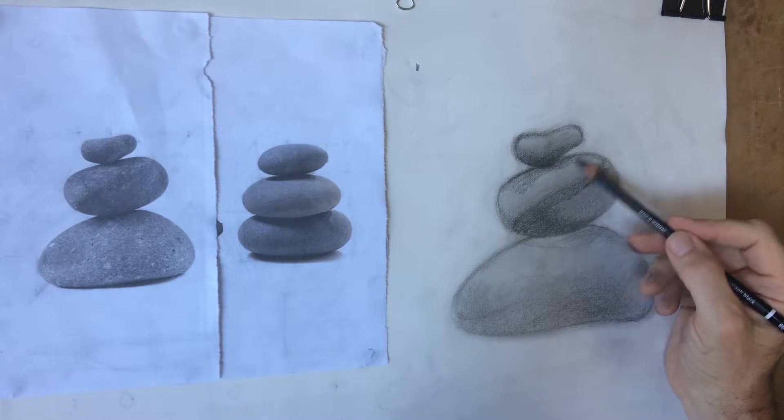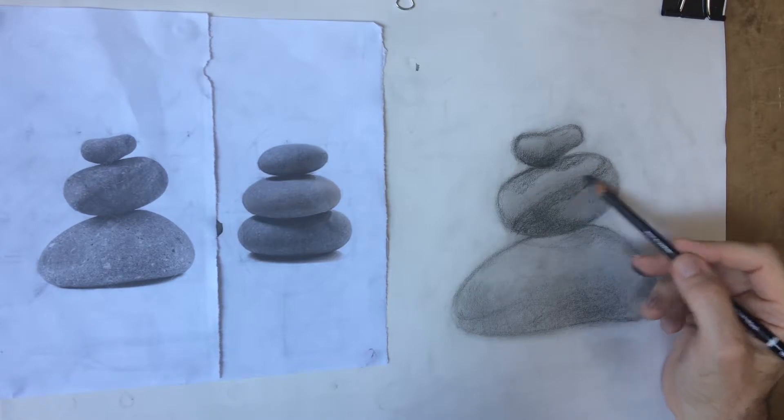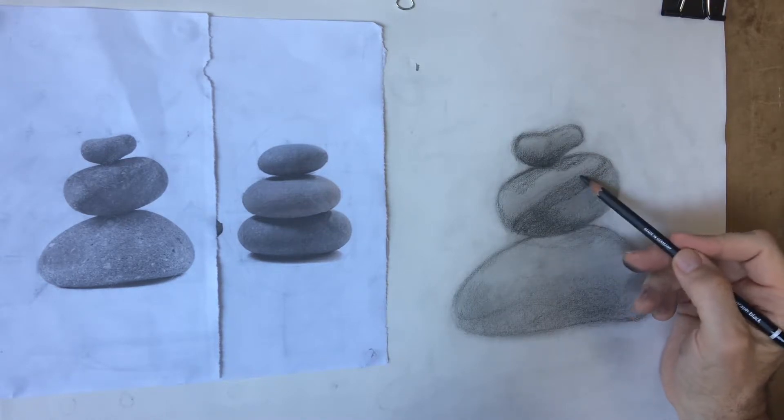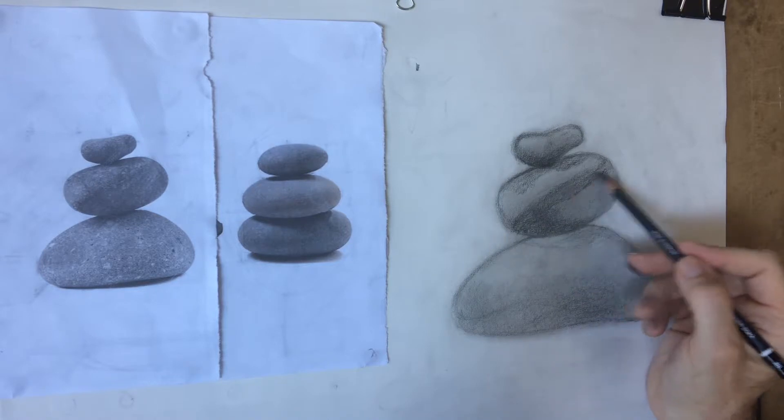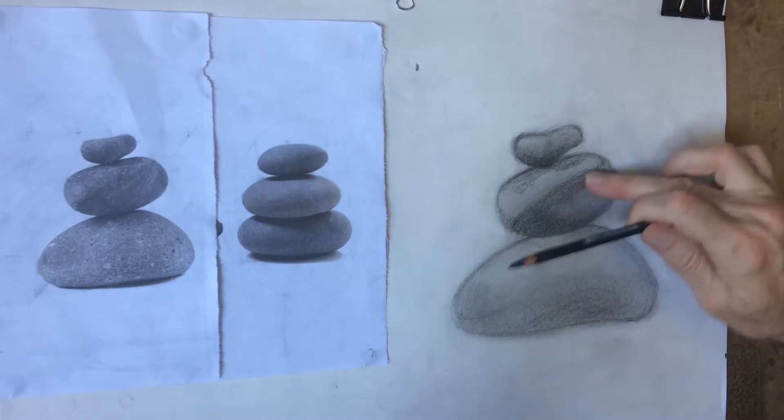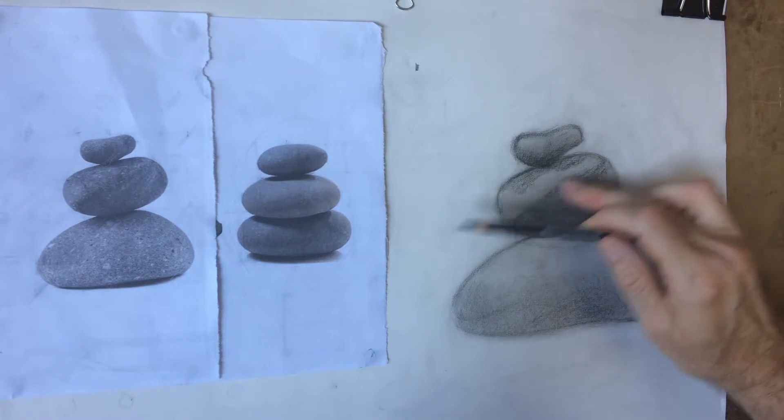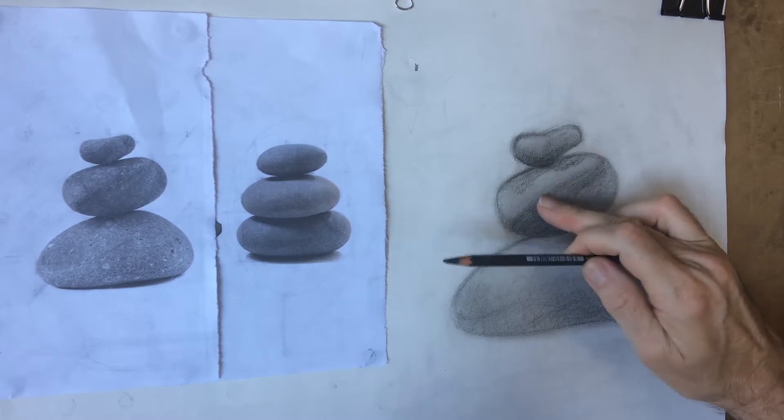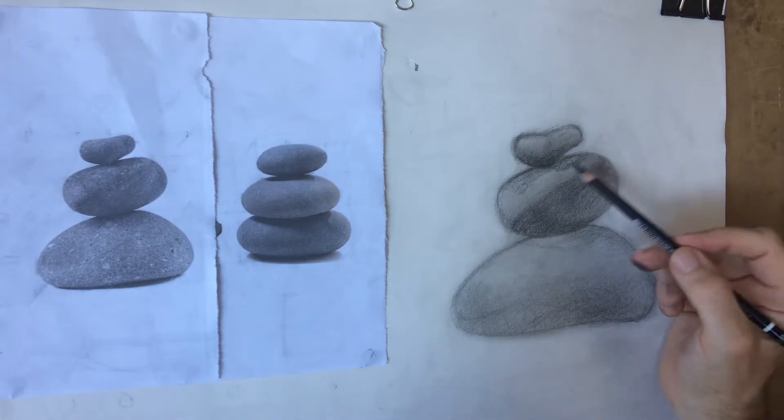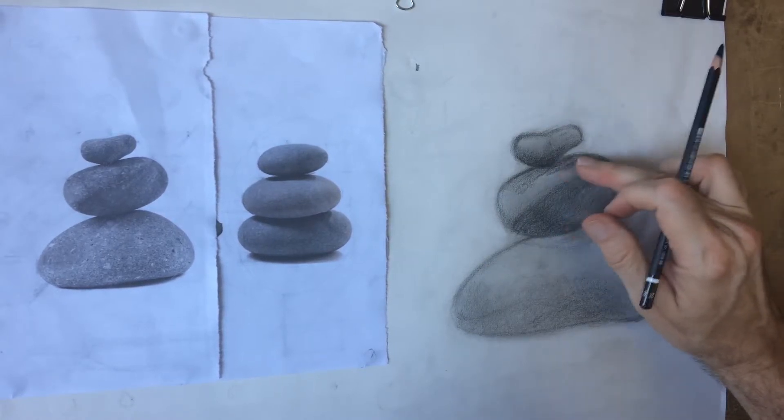I'm gonna shade in some cast shadow there. That seems to want to go higher. I'm doing a little bit of blending, darkening with my pencil. The blending helps sort of tone down the degree of value change, which makes the turning of the shape a little more subtle.